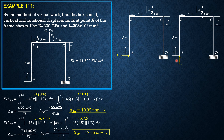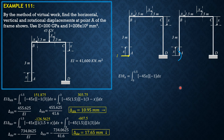Finally, for the rotation at A, we apply a counterclockwise unit couple of 1 — since that is the positive rotation convention. We begin with the section from 0 to 1.5: the integrand is (−45X)(−1) dx, because the moment at that section due to the virtual couple is negative (clockwise positive). Then we add the integral from 0 to 3: the virtual moment in that section is also negative 1, so we integrate (−45 × 1.5)(−1) dx.